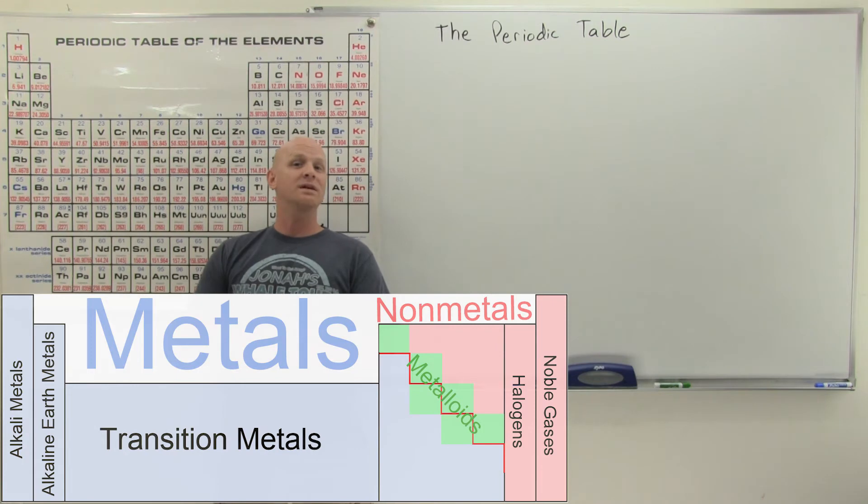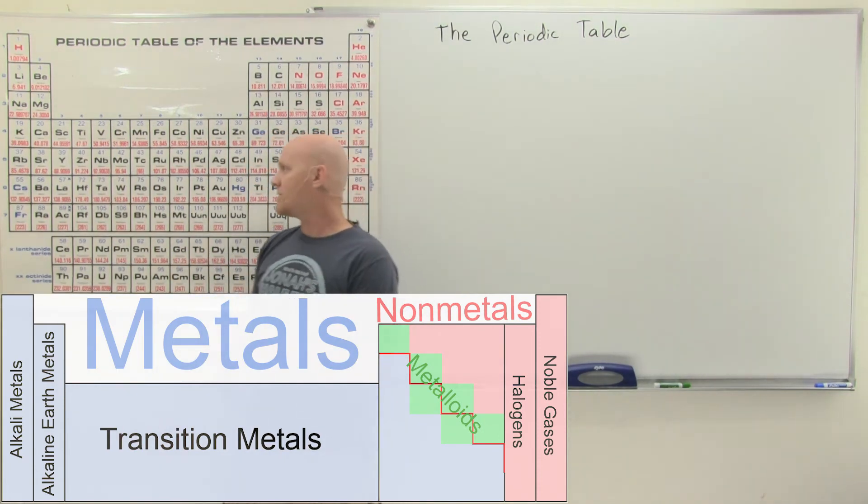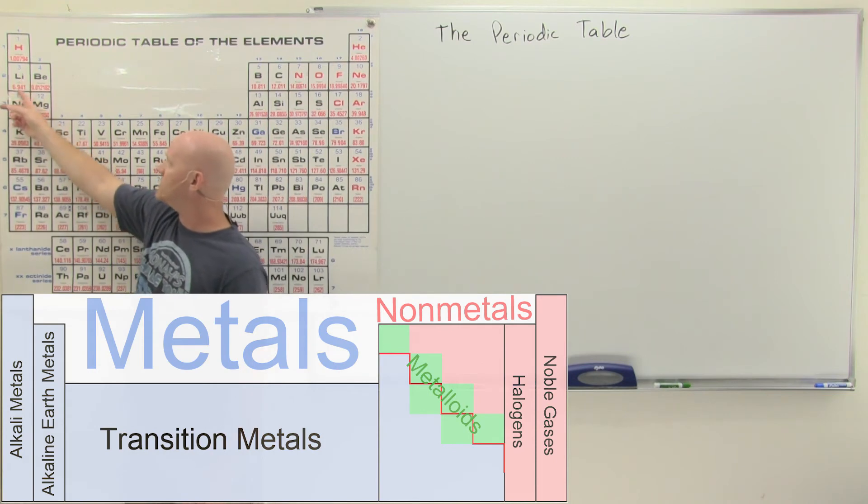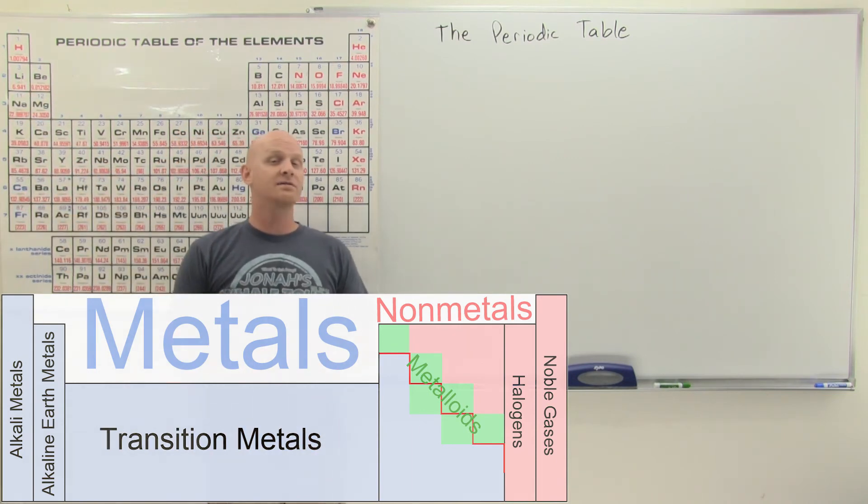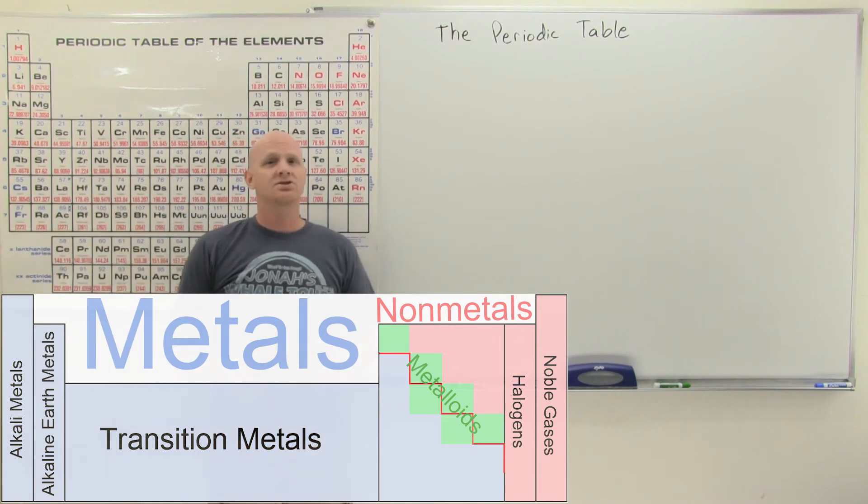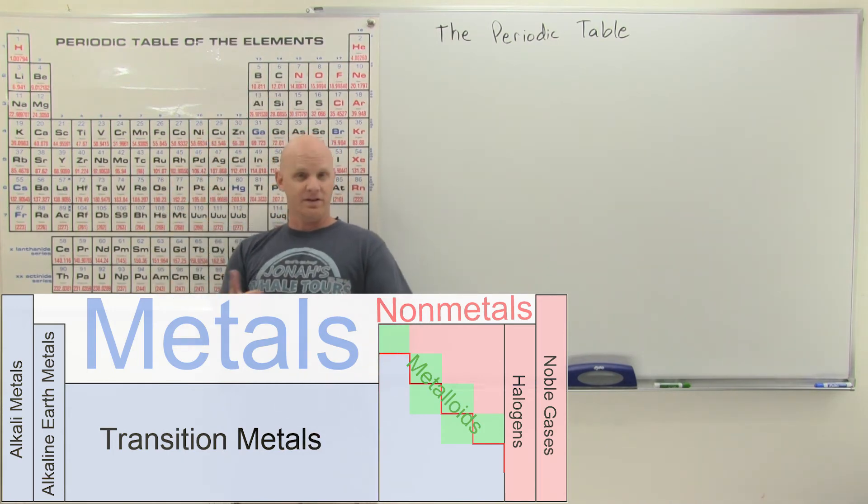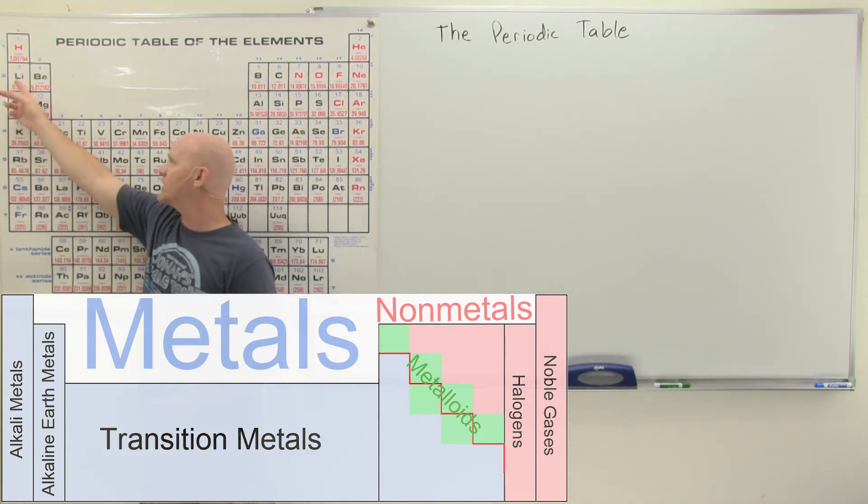Now, alkali, it turns out, means basic. And when I say basic, I don't mean like, well, it's just basic chemistry, Chad. It's not actually what I mean. I mean like acidic versus basic. And the reason is if you put any of these in water, one, they're going to react violently with water. And even more violently as you go down, it's kind of a weird thing. And they're going to turn the water into a highly basic solution. The pH is going to go up above seven pretty significantly. So that's why they call them the alkali metals.